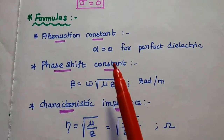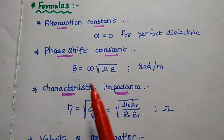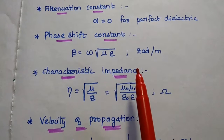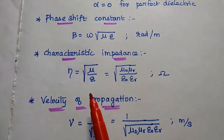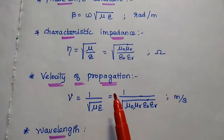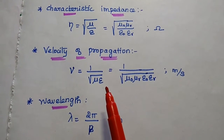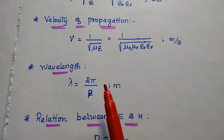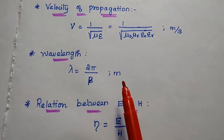The attenuation constant for a perfect dielectric is always zero. The phase shift constant beta is equal to omega times the square root of mu epsilon, with units of radian per meter. The characteristic impedance eta equals the square root of mu divided by epsilon, with units of ohms. The velocity of propagation v equals 1 divided by the square root of mu epsilon, in meters per second. The wavelength lambda equals 2 pi divided by beta, in meters.